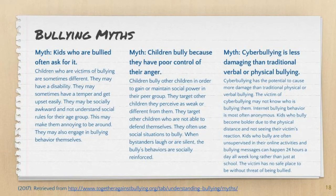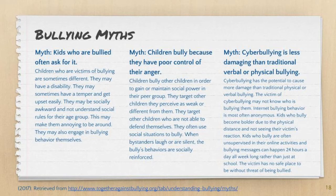The next myth is that kids who are bullied often ask for it. Typically, children who are victims are those we think of as sometimes different. They may have a disability, they may have more extreme emotional reactions and get upset easily, or they may be socially awkward and not understand social rules for their age group. This may make them more annoying to be around and makes them targets for bullying in the school setting.